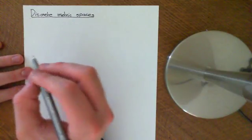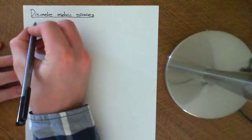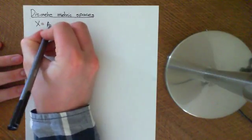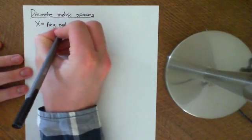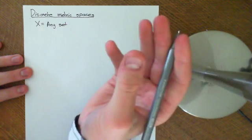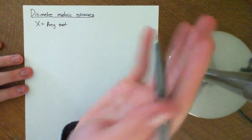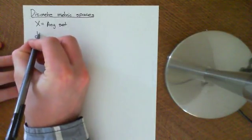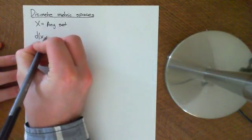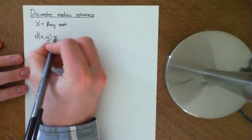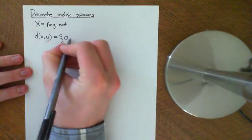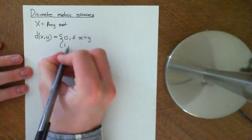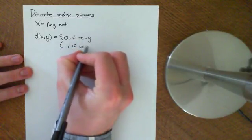The way that you construct them is you take any set — let X equal any set. I can put a discrete metric on it which will obey the axioms of a metric space. The way you do this is you define the distance between any two points x and y to be equal to zero if x equals y, or one if x is not equal to y.